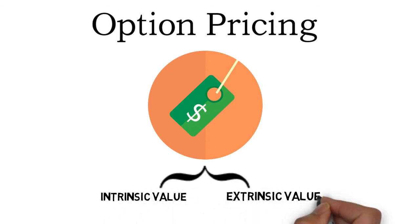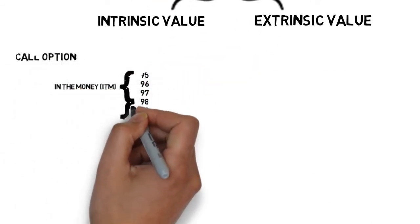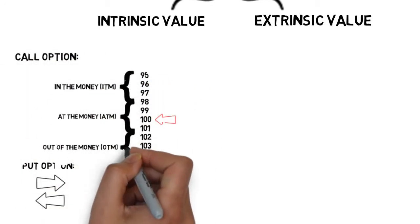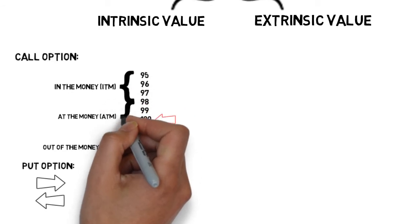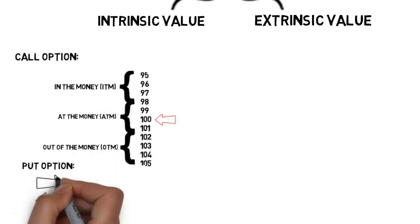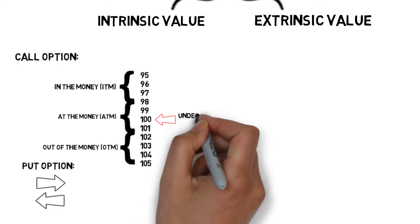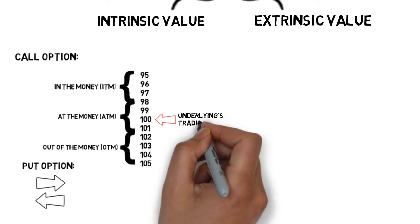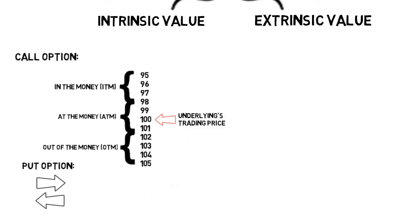Let's start with intrinsic value. To understand this it is important to understand the strike prices of an option. In my last video lesson we discussed the different strike prices. As you can see, a call option is in the money, or ITM, when the strike price is below the trading price of the underlying. The call option is at the money, or ATM, when its strike price equals the underlying trading price or is at least around it. And it is out of the money when the strike price of the call option is above the trading price of the underlying.